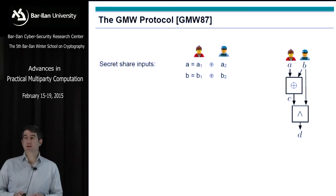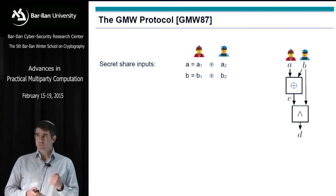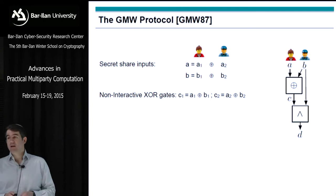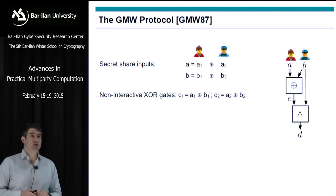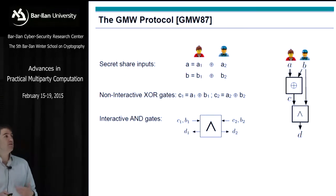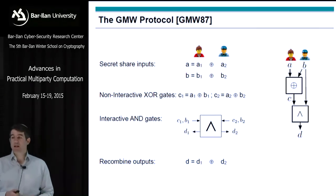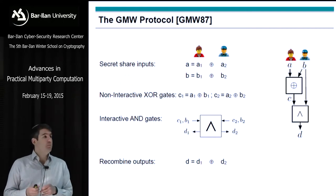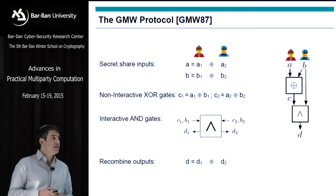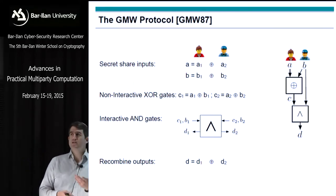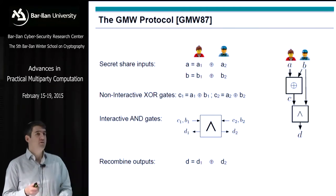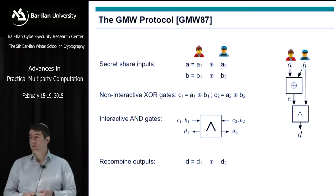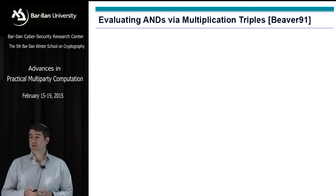GMW: the parties have on every input wire a sharing of their bits — a simple XOR sharing of their inputs. For XOR gates, they can just locally XOR the shares on the input wires. For AND gates, they need to run an interactive protocol using one-out-of-four oblivious transfer. Then they recombine the outputs at the very end. If you were to implement this, you wouldn't send a different packet for every AND gate — you'd do each level of the circuit. Here again, we need efficient circuits to make this efficient.